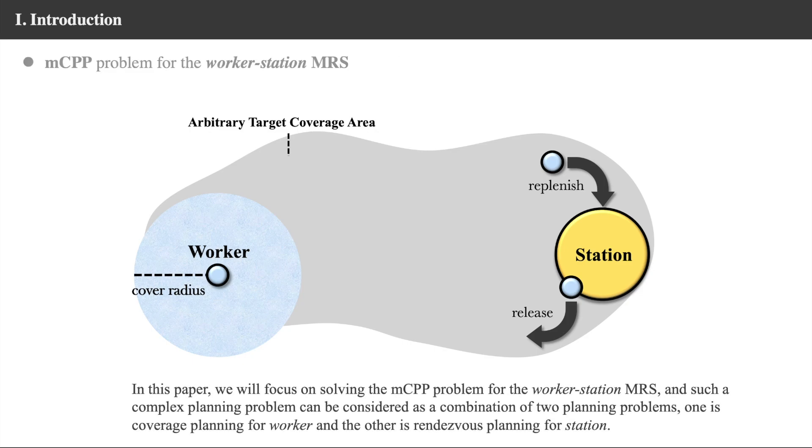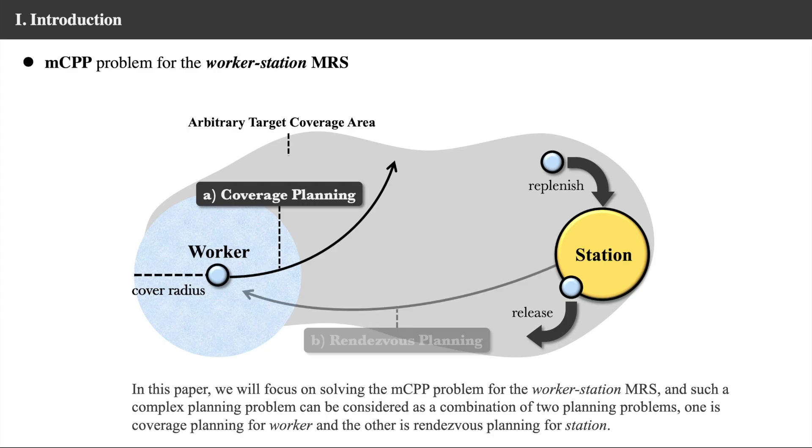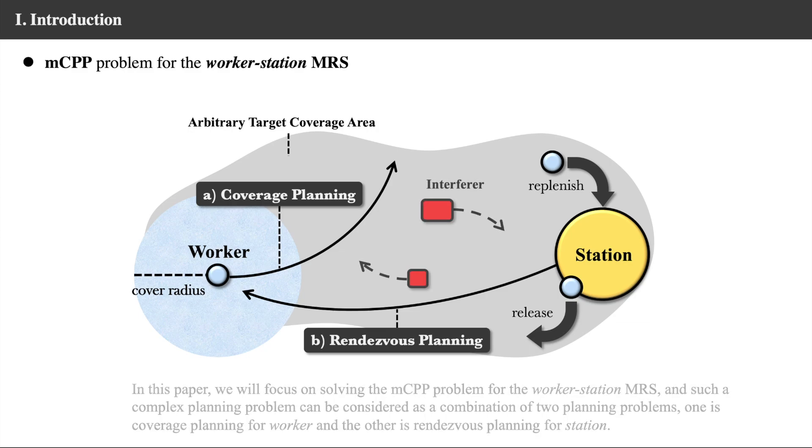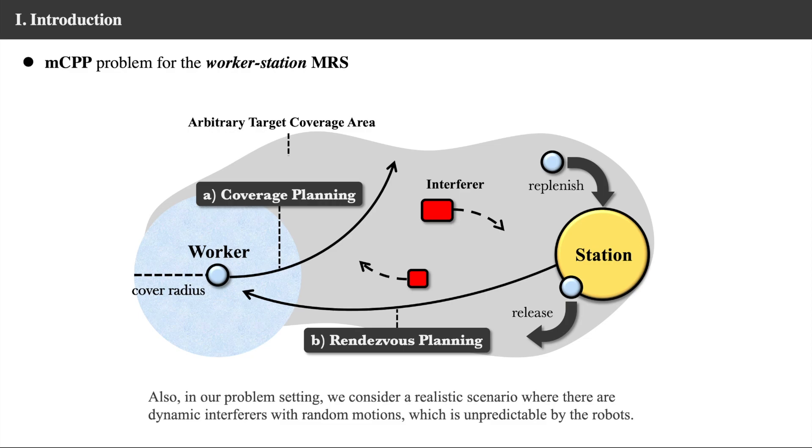In this paper, we will focus on the MCPP problem for the worker station MRS, and such a complex planning problem can be considered as a combination of two planning problems. Also, in our problem setting, we consider a realistic scenario where there are dynamic interferers with random motions.